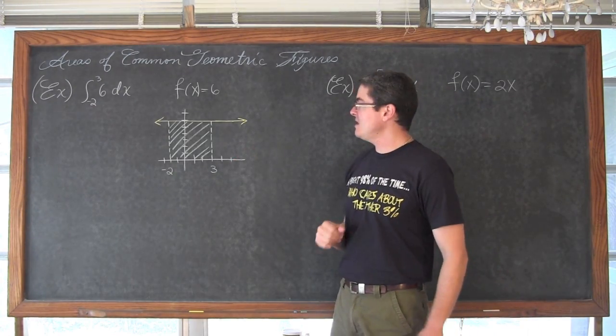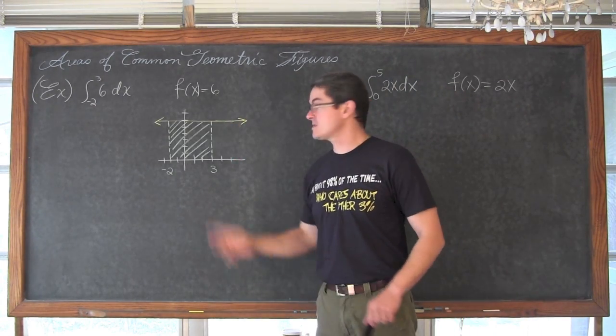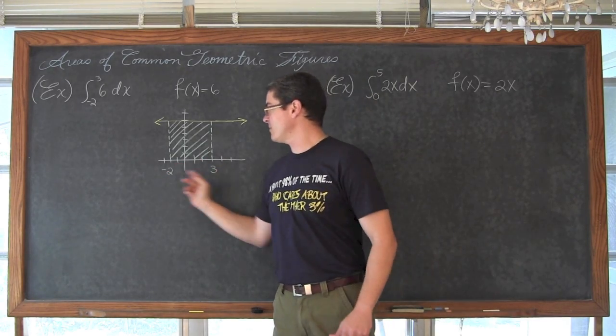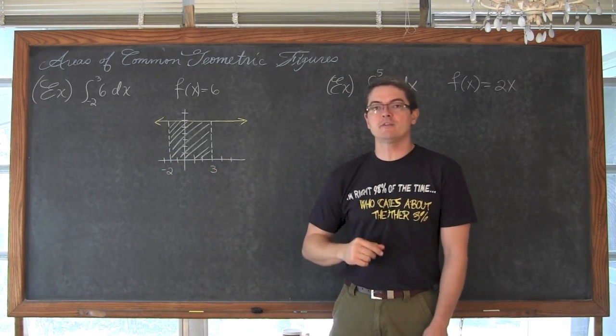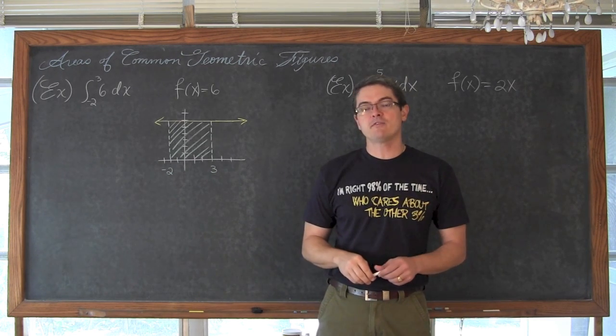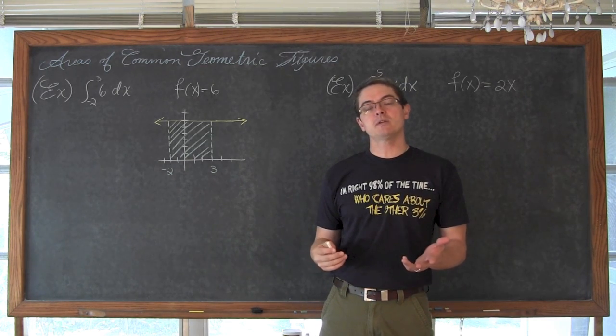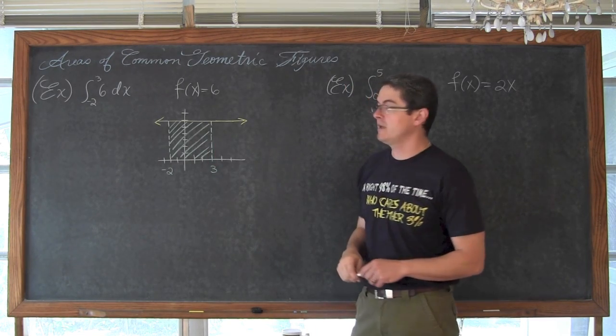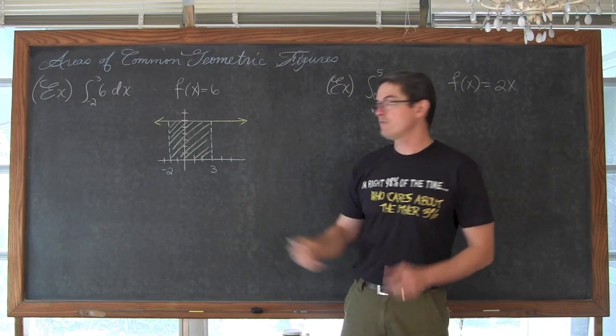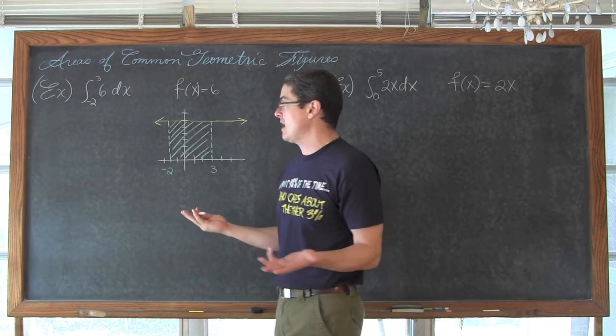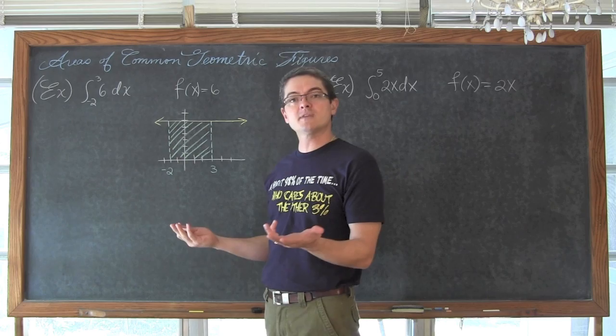Well, we can see that when we graph y equals 6, here is our horizontal line, and when we mark off the closed interval from negative 2 to 3, we can see all that we are doing is trying to find the area of a rectangle. So instead of going through that whole limit process and just recognizing that since we are taking the definite integral of a constant, all we are finding is that area of a rectangle, and that is just the area formula length times width.